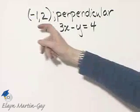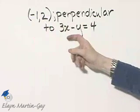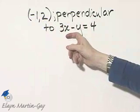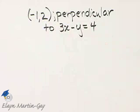Let's write an equation of the line that goes through this point and is perpendicular to the graph of this linear equation in two variables.